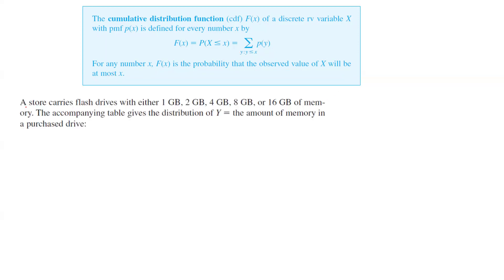Consider the following example: a store carries flash drives with either 1, 2, 4, 8, or 16 gigabytes of memory. The accompanying table gives the distribution of Y, where variable Y is the amount of memory in a purchased drive.